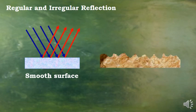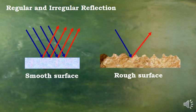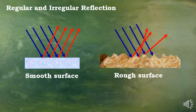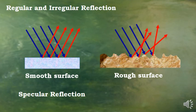For a regular surface, reflection takes place as regular reflection. For an irregular or rough surface, it is irregular reflection. Smooth surface reflection is also called specular reflection, and for rough surfaces it is called diffuse reflection.